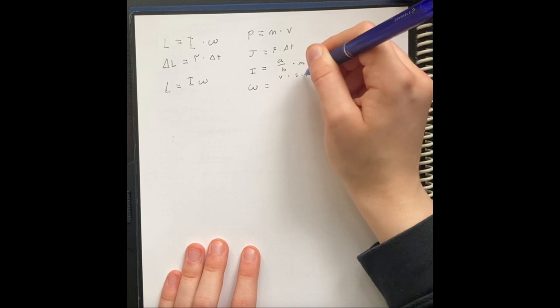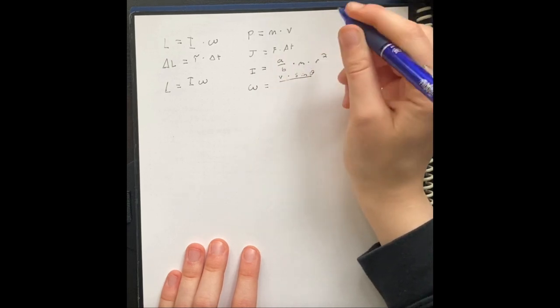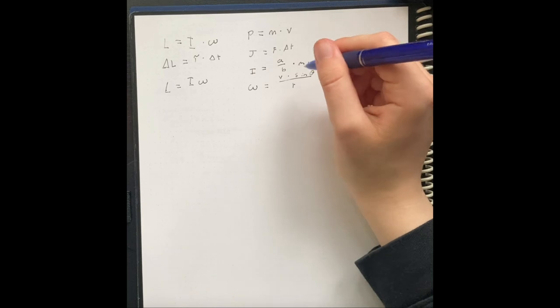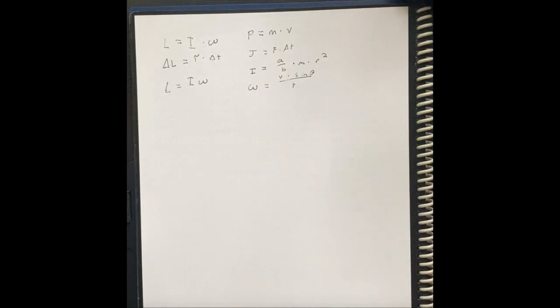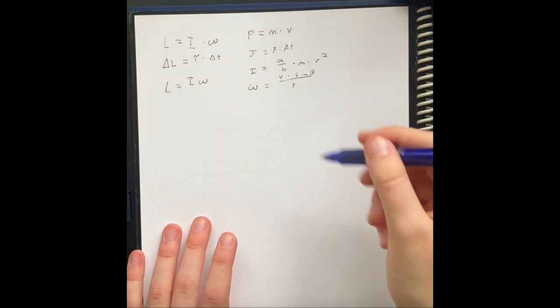We don't normally put the sine of theta because it's normally just perpendicular, divided by a radius. Here, we are compensating for the fact in case there is a velocity vector that is not perpendicular to the radius.